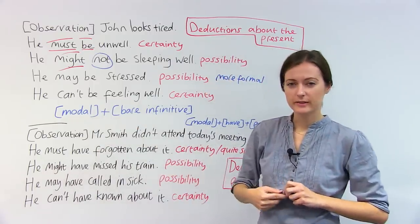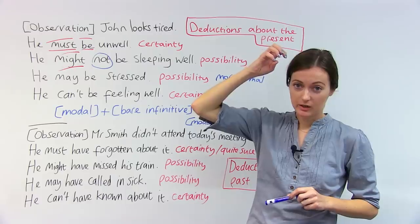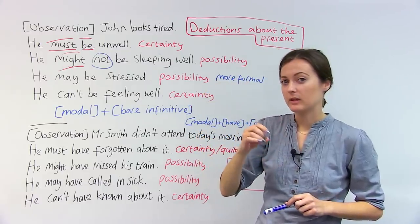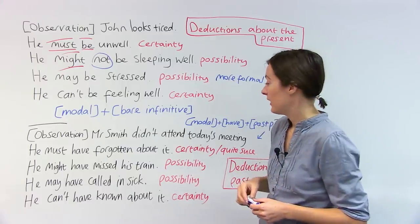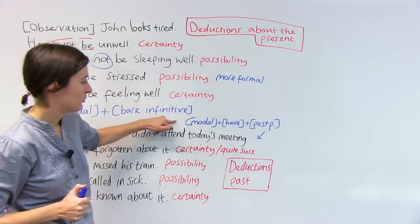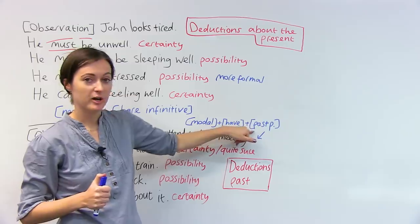So it's not too hard. What if we're not talking about deductions about the present, ones that are true now? What if we're talking about past events? What do we do then? Well, we use a different grammar structure.